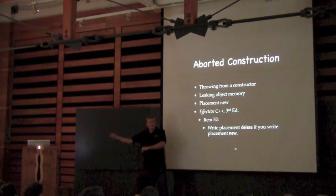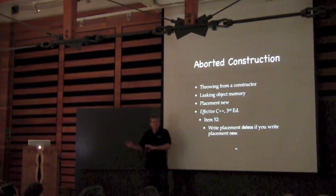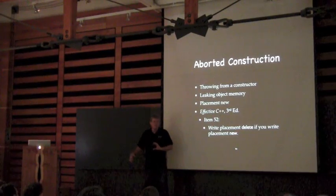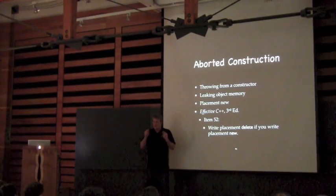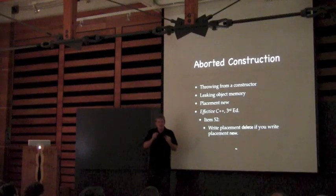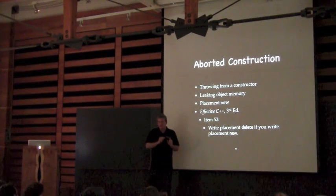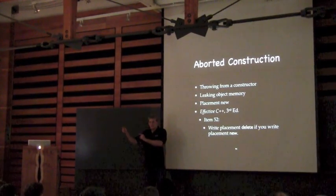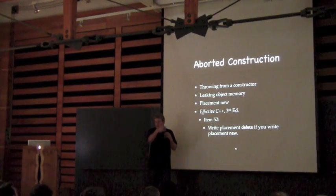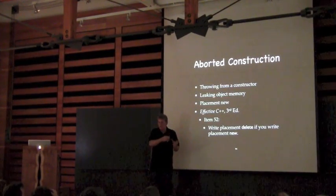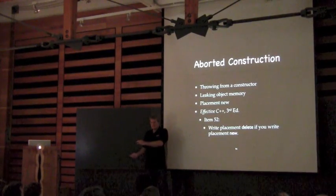When you call placement new and it fails, there's no way for the compiler to know the proper way to clean up the memory. So the standard says: create a placement delete — one with the same number and types of parameters as the new. There's no way to call placement delete directly; you can't pass extra parameters to delete. However, the compiler, if you called placement new and the object threw in its constructor, will call the matching placement delete so that if you need to do something to reclaim memory, you can.